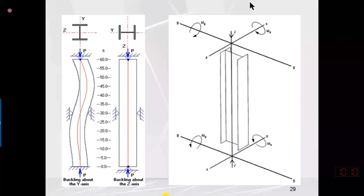A section does not have the same slenderness ratio about the x-axis and the y-axis. A column section will always buckle or bend about the axis for which the slenderness ratio is maximum. The slenderness ratio is equal to KL/r, where K is the effective length factor, L is the unbraced length, and r is the radius of gyration about any axis.